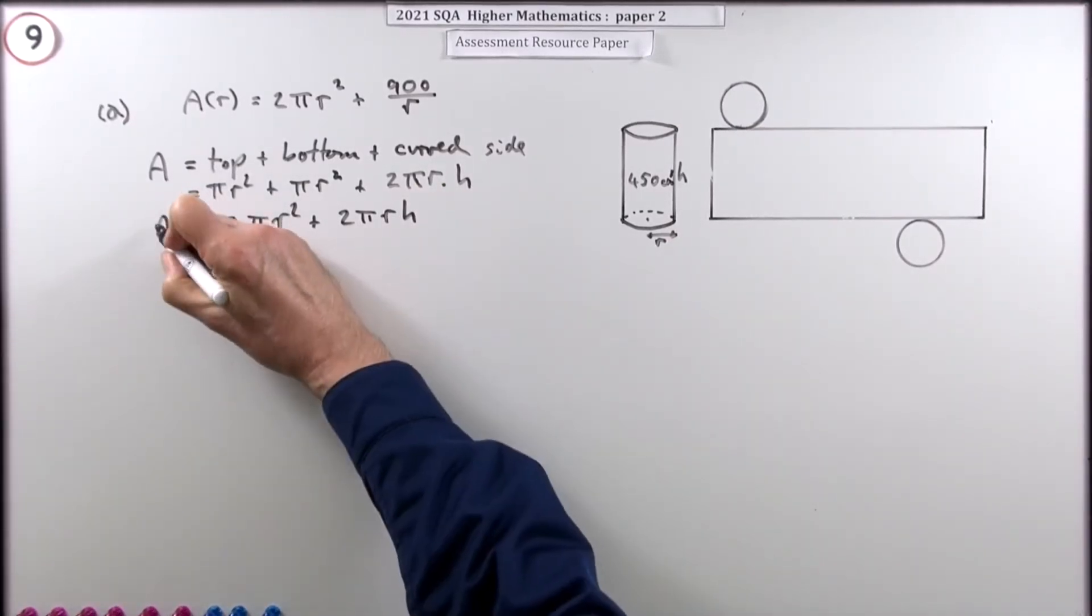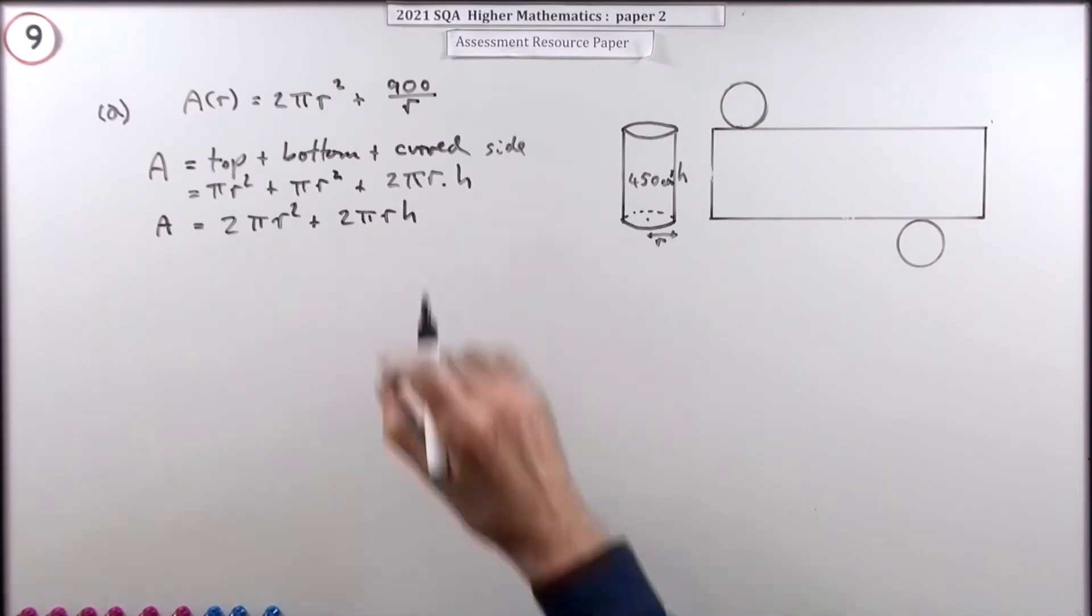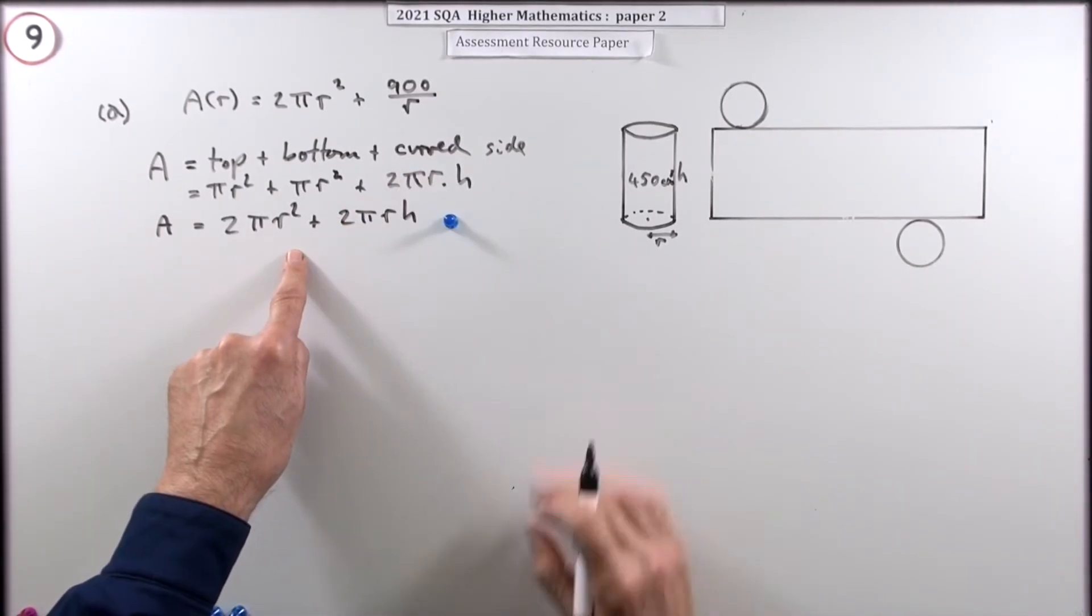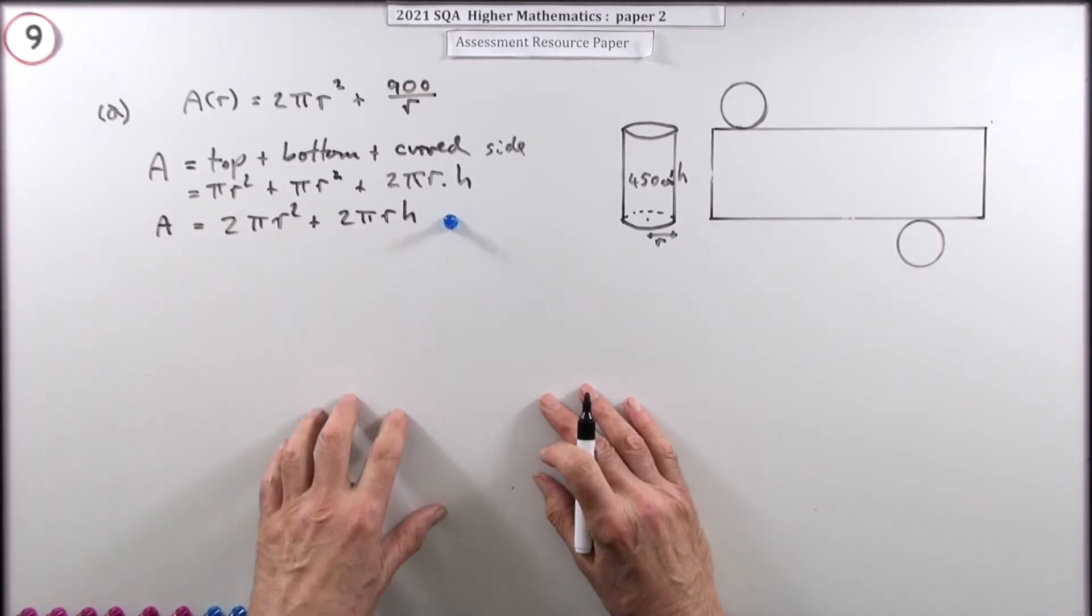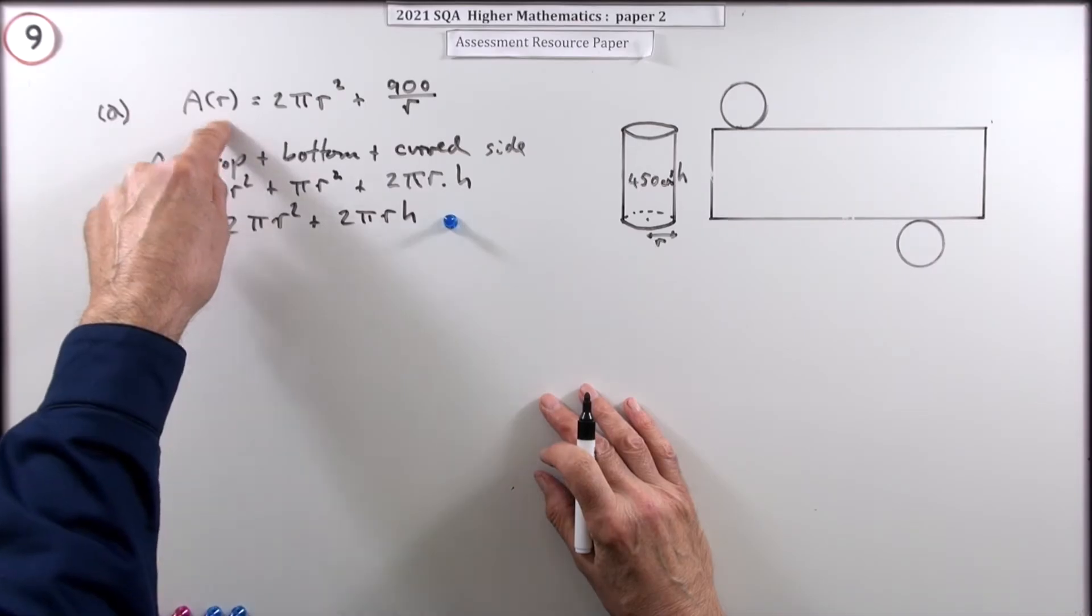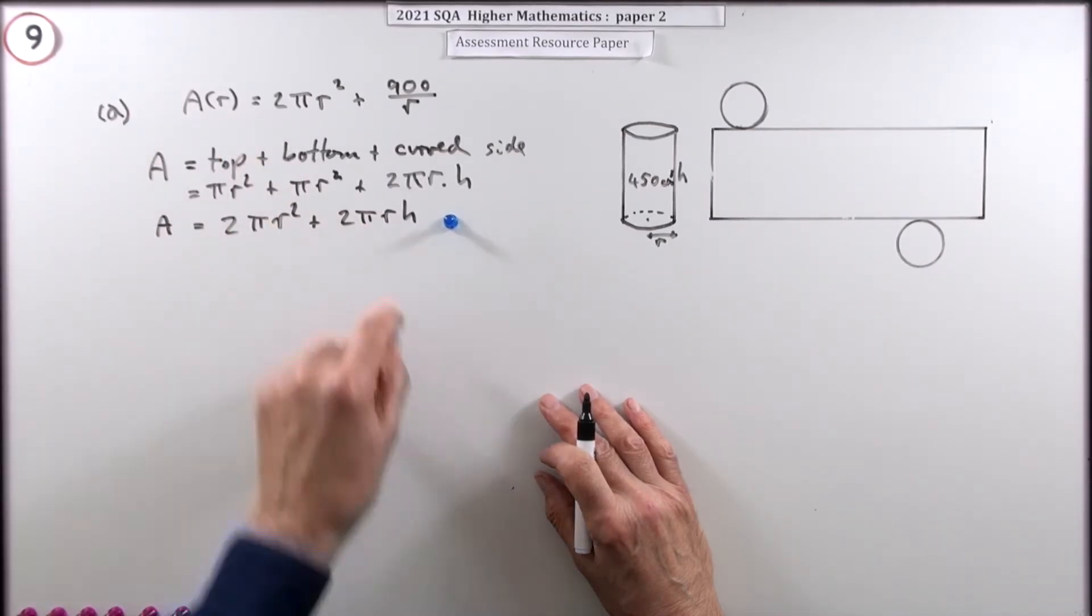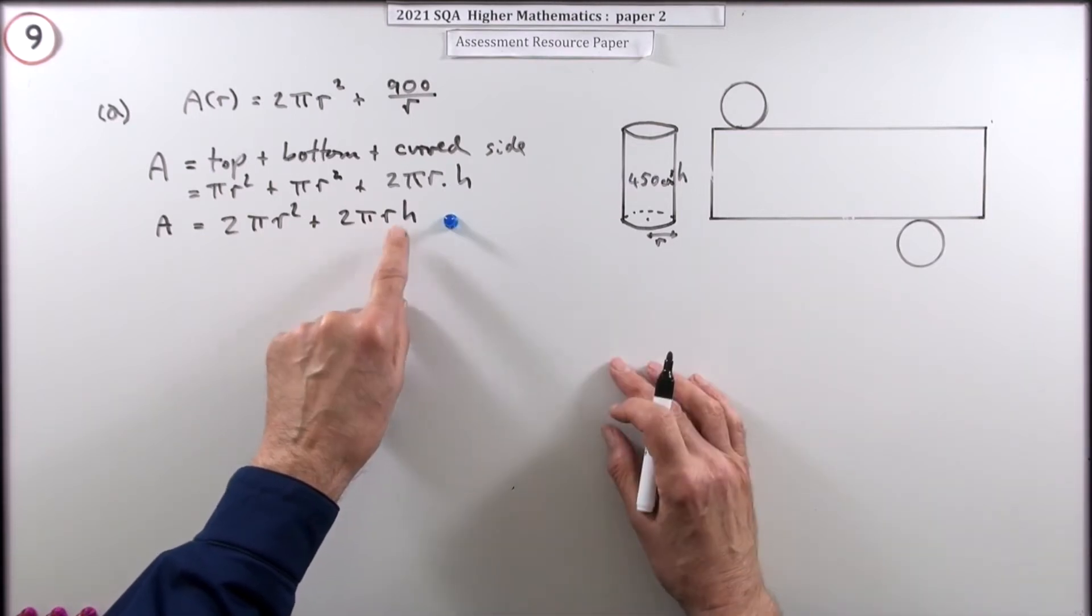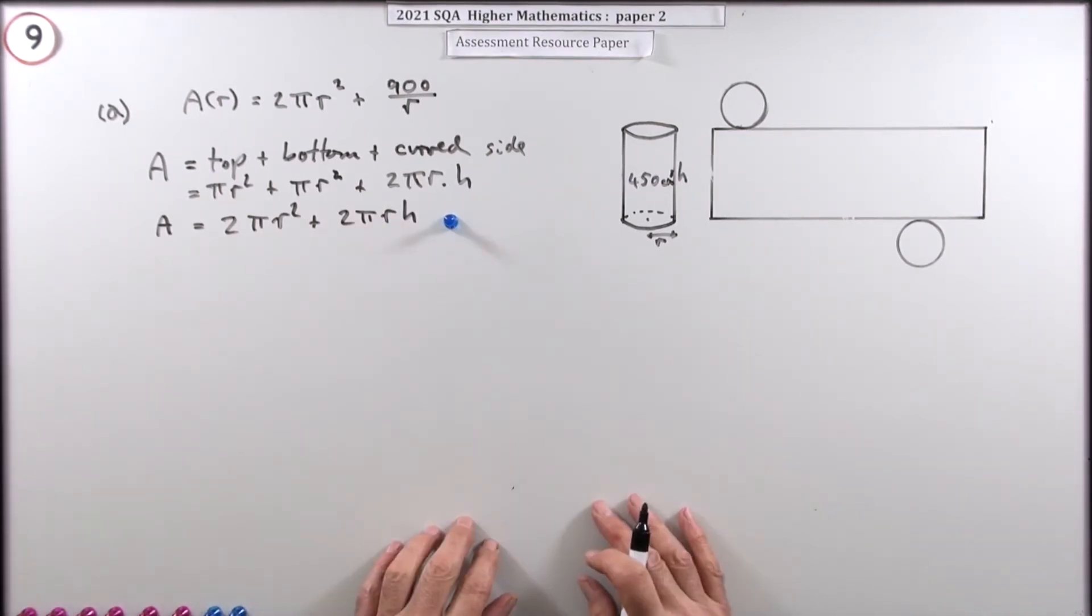Now, that's the area in terms of r and h. Well, that gets a mark. Except that's no use for differentiating because you've got two variables and you don't know how to deal with that. You have to get it down to just one variable. You need rid of this h. The way you get rid of that h is you need to find some connection between r and h. There has to be another bit of information somewhere, and there it is, the volume.